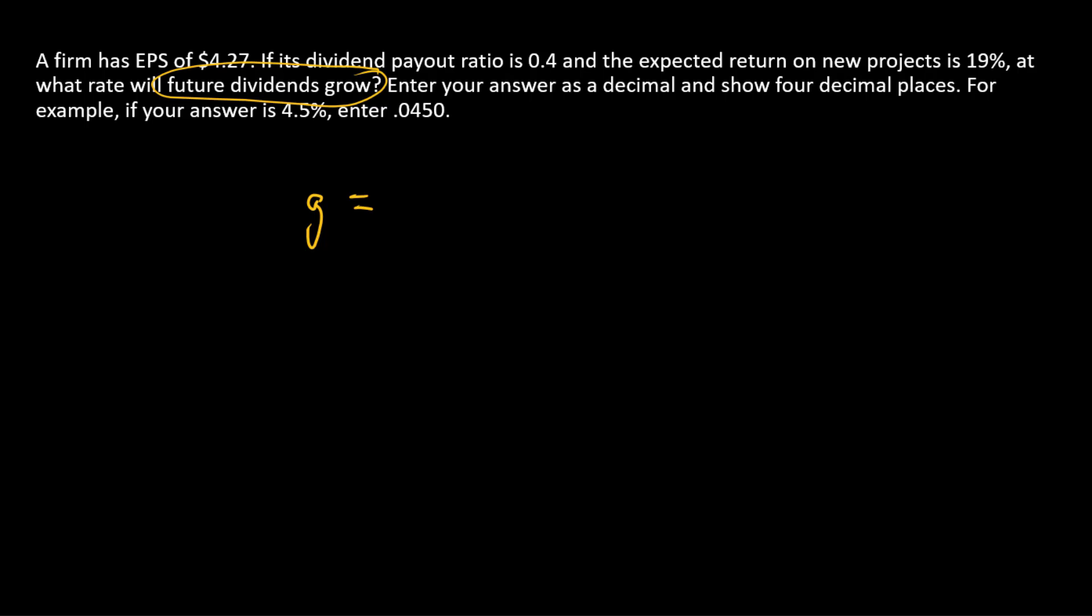The formula for growth, so this is going to be a growth rate, is the plowback ratio, or PB, times what we call ROE, or return on new equity.